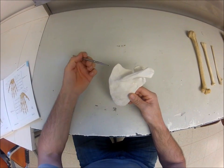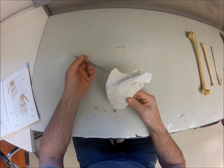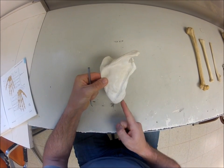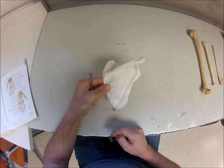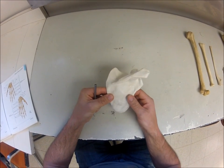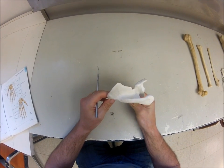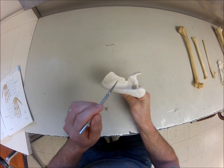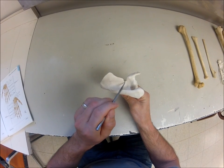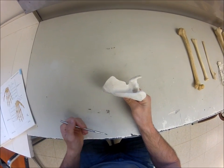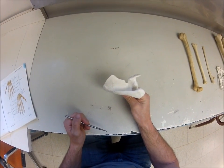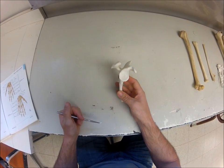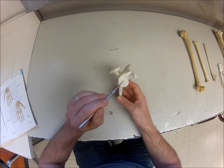If we follow the medial border all the way up to the top, we have what's called the superior angle. If we follow the inferior border all the way down to the bottom, we have what's called the inferior angle. Looking up at the top of the scapula, we see along the upper border we have this notch here called the scapular — or sometimes called the suprascapular — notch.